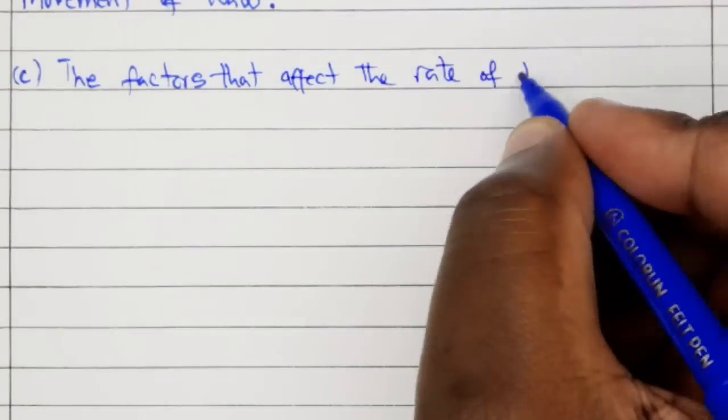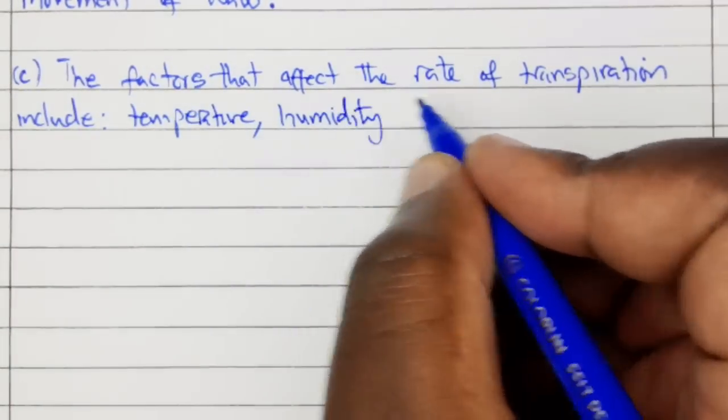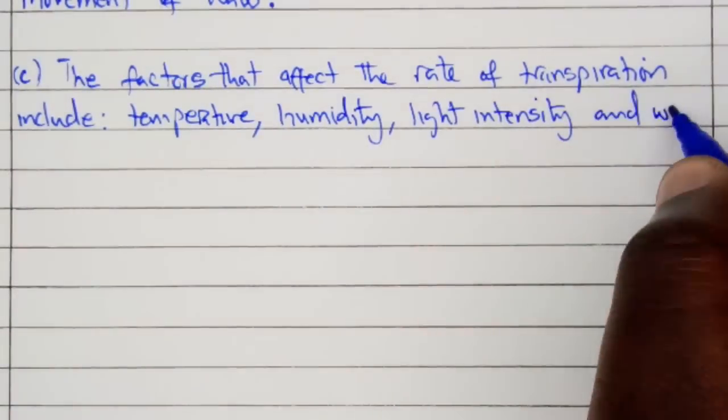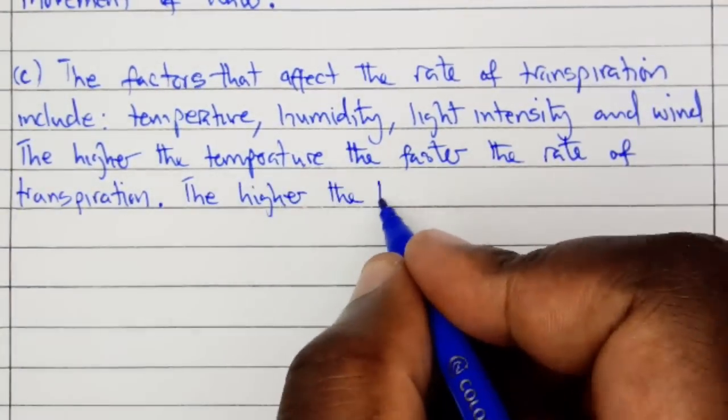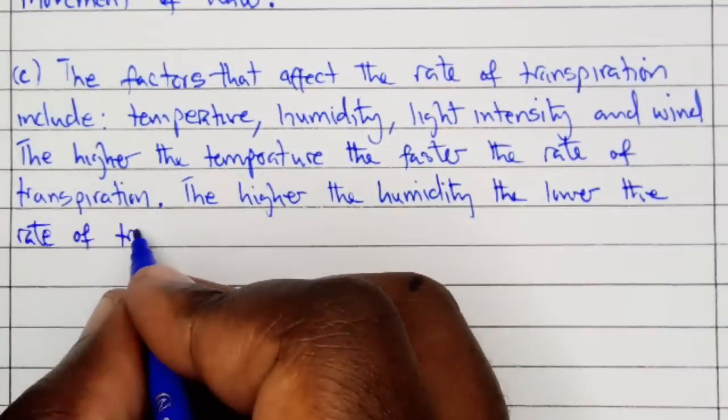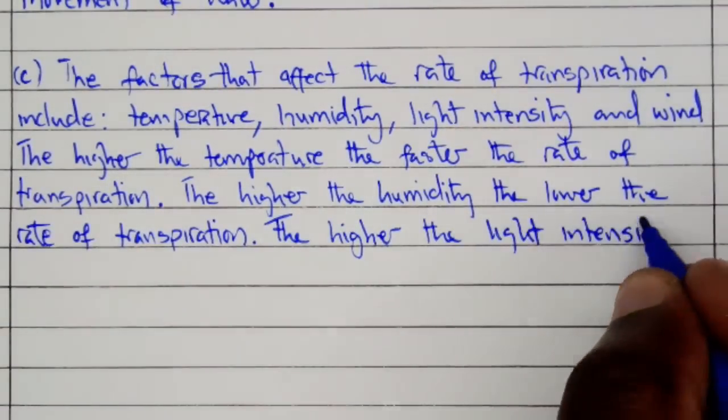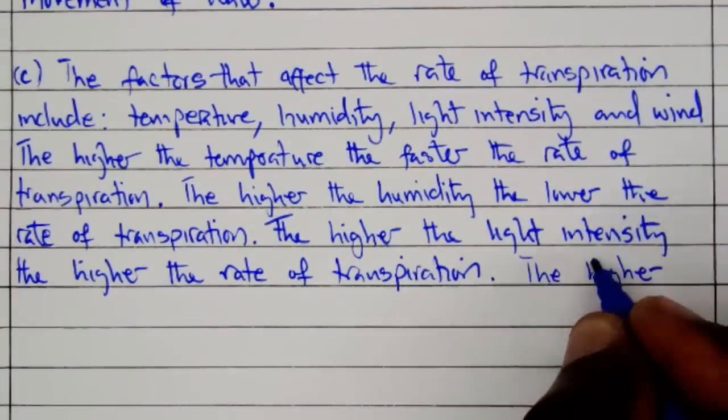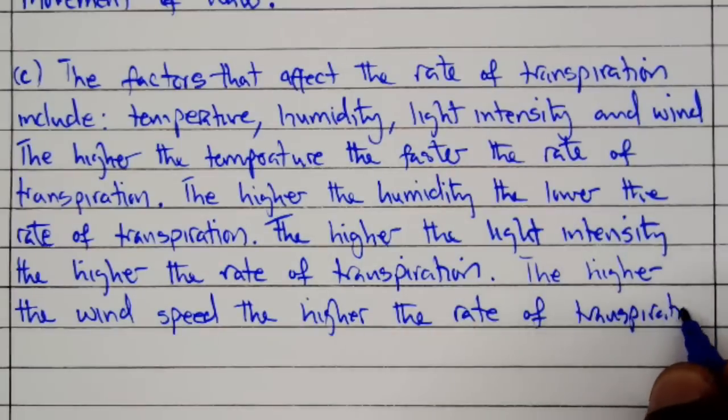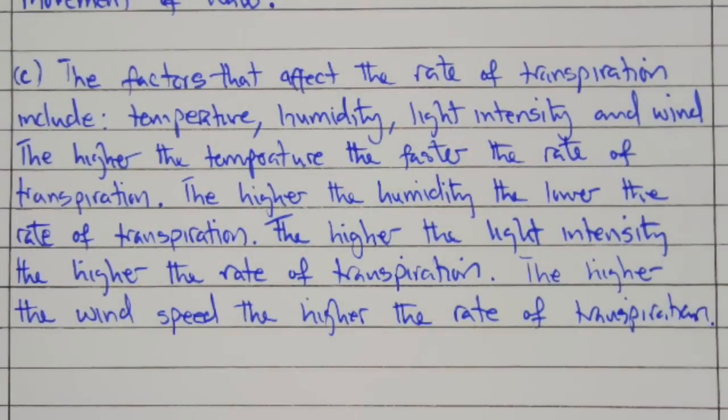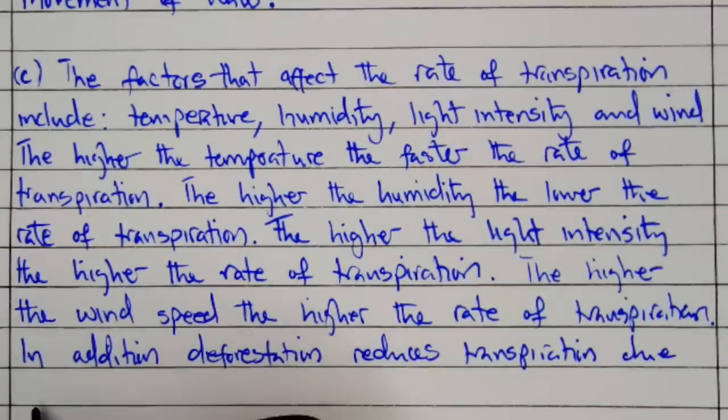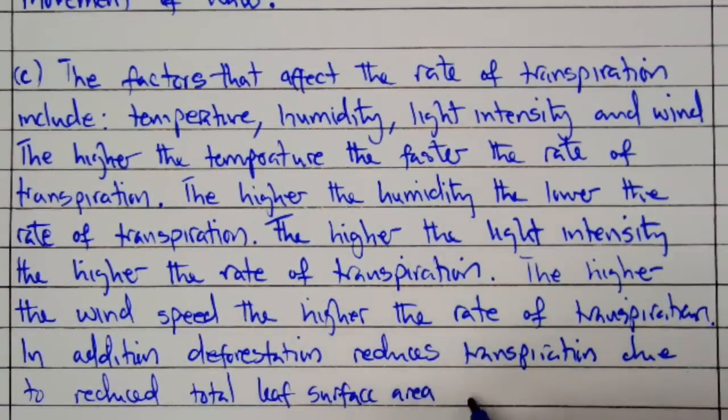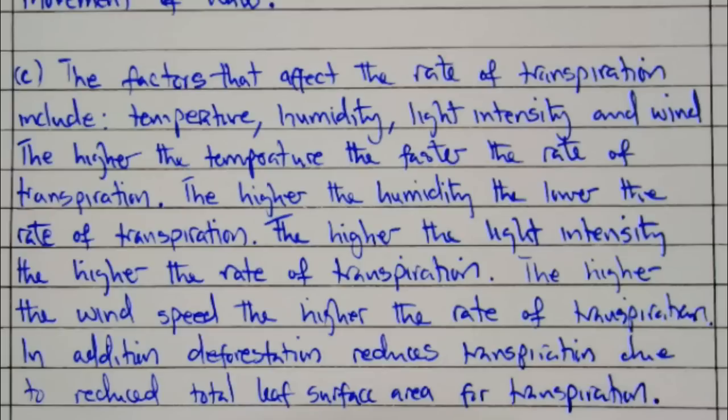Part C: The factors that affect the rate of transpiration include temperature, humidity, light intensity, and wind. The higher the temperature, the faster the rate of transpiration. The higher the humidity, the lower the rate of transpiration. The higher the light intensity, the higher the rate of transpiration. The higher the wind speed, the higher the rate of transpiration. In addition, deforestation reduces transpiration due to reduced leaf surface area for transpiration. These were the answers to question number six.